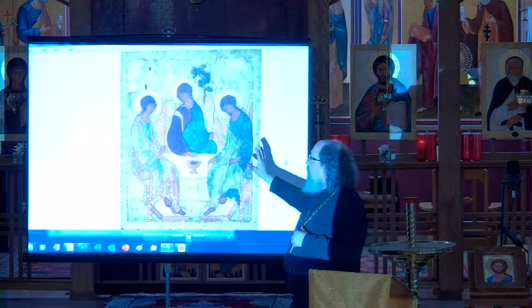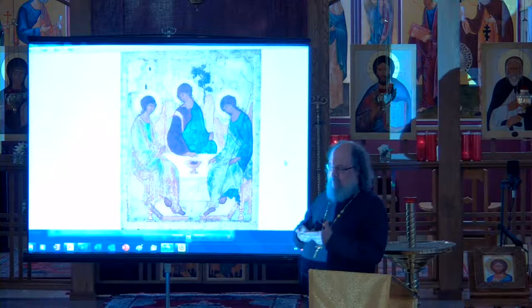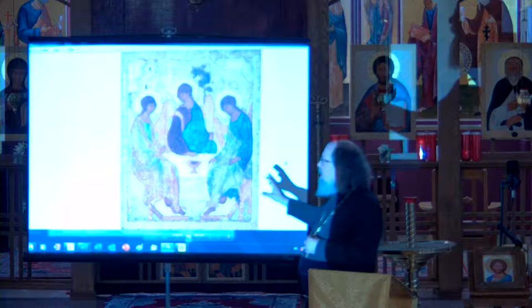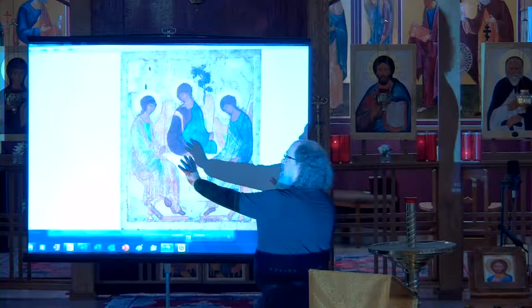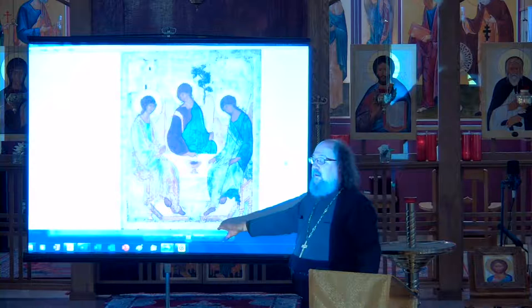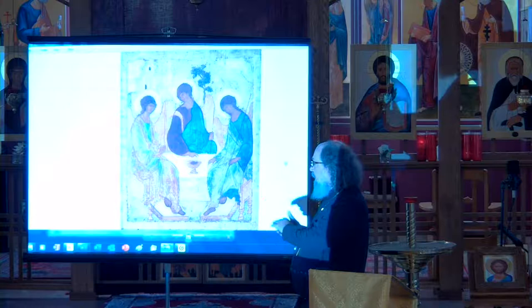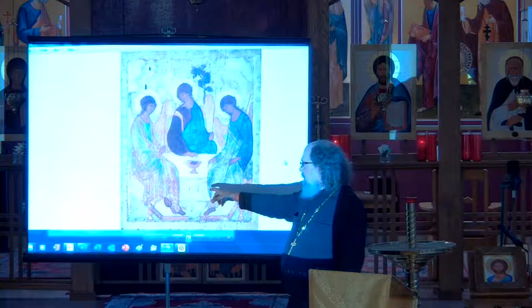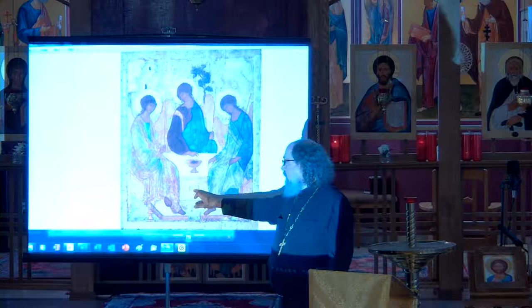What Andrei Rublev did was reduce the incident — the appearance of the three men at the oak of Mamre — to its essential elements. The original model typically includes Abraham and Sarah on either side, and someone killing the fatted calf at the bottom. Rublev reduced it to the essential elements.